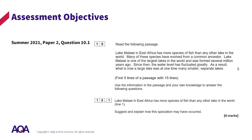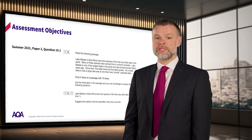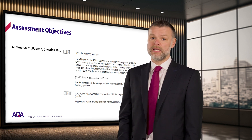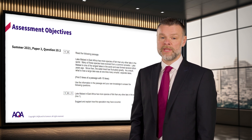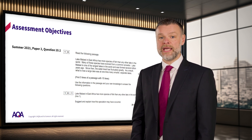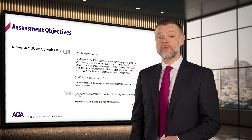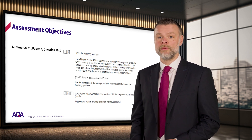Now for our final assessment objective question, where again for spacing purposes I've just included the first five lines of the passage. Which objective does 10.1 intend to assess? You may have noticed that the rubric underneath the passage states that students need to use their own knowledge and details provided in the passage. And in this case, with question 10.1, this assesses AO1 and AO2. If students do not use their own knowledge (AO1) and the information in the passage (AO2), they will not be able to access all four marks.